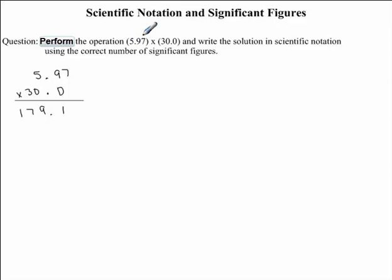Taking a look at our first number, 5.97, you'll notice that we have three significant figures: 1, 2, and 3. Our second number, 30 decimal 0, also has three significant figures: 1, 2, and 3. These zeros are considered significant. Since both of our numbers have three significant figures, therefore our final answer will also have three significant figures.